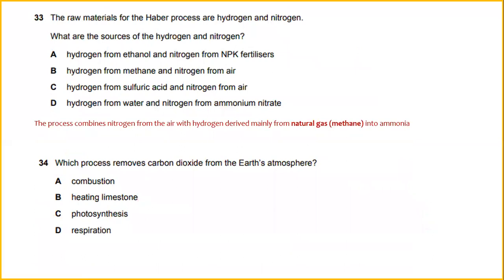The raw materials for the Haber process are hydrogen and nitrogen. What are the sources of hydrogen and nitrogen? The process combines nitrogen from the air with hydrogen derived mainly from natural gas, which is methane, into ammonia. So the answer would be B: hydrogen from methane and nitrogen from air.